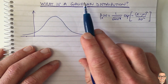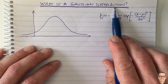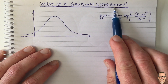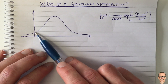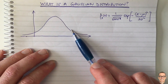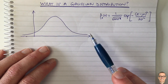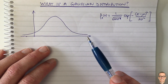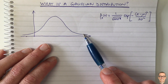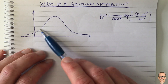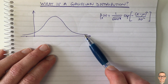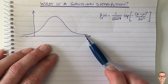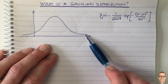So what is a Gaussian distribution? It's the common bell-shaped curve, sometimes called the bell-shaped curve, because this probability density function looks like the shape of a cross-section of a bell.